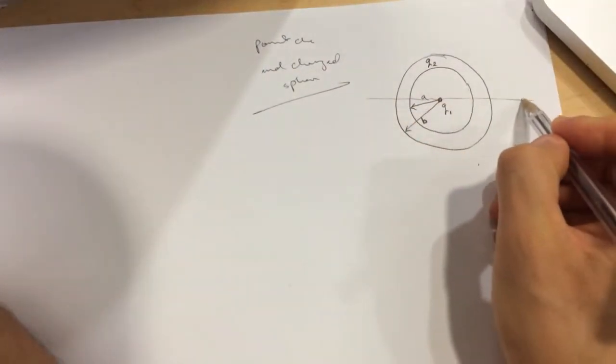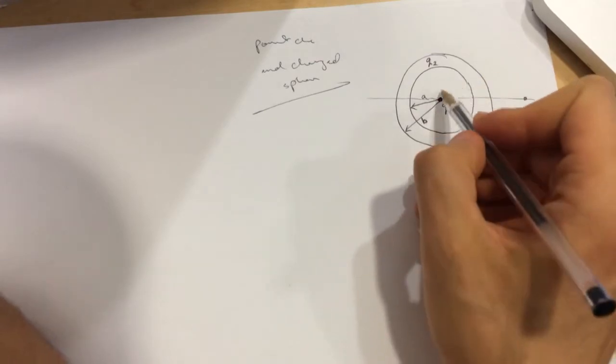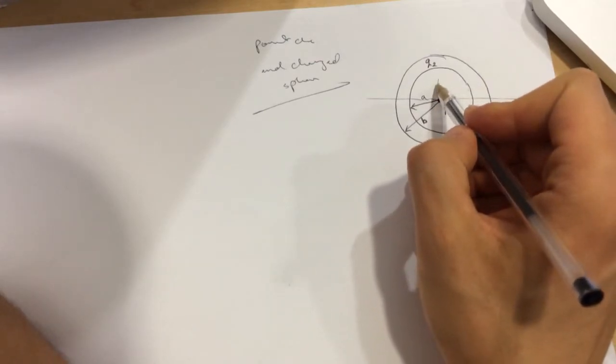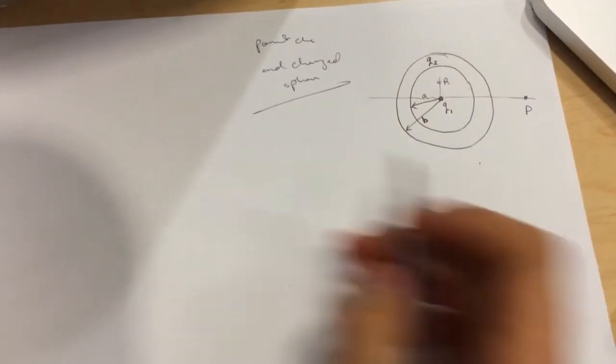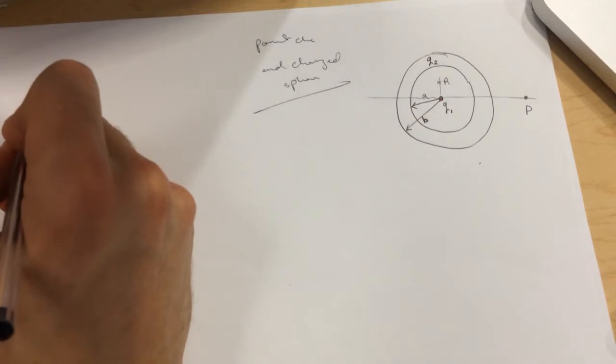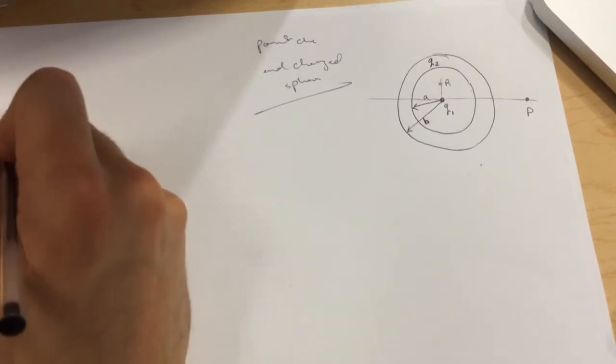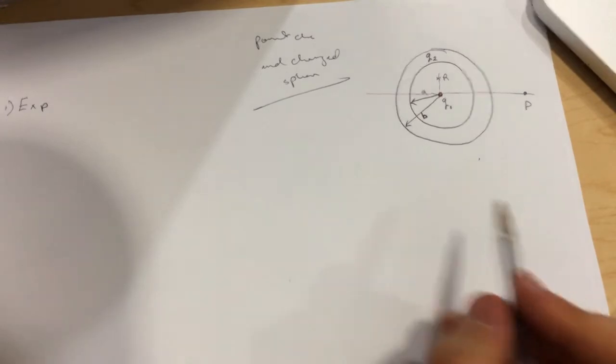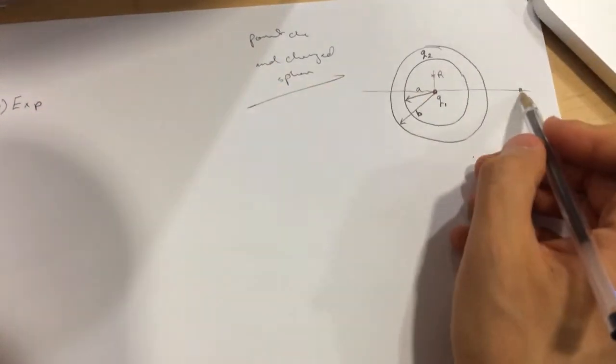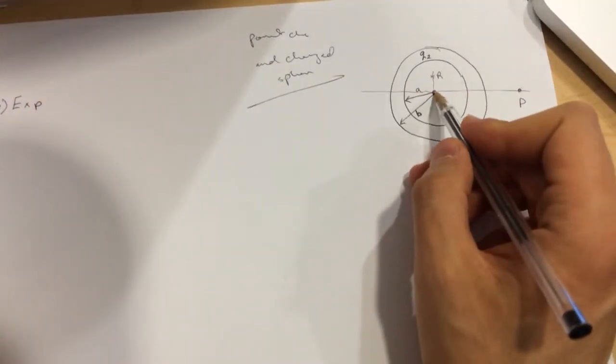The first question is asking what is E_xP, so they want to find the electric field in the x-direction. They give us the point P, the distance from here to the point P.